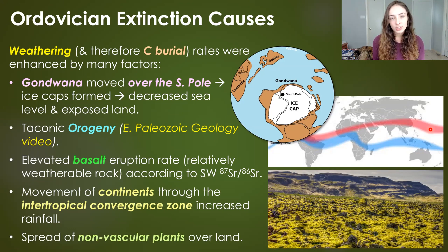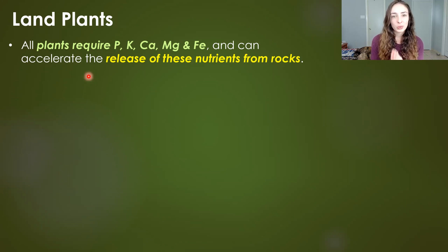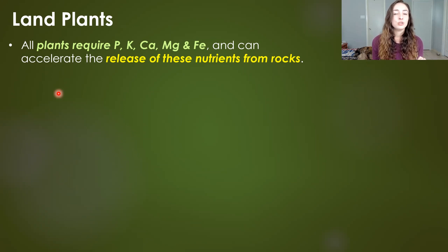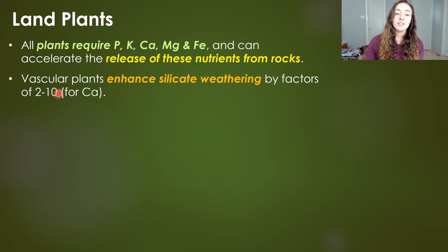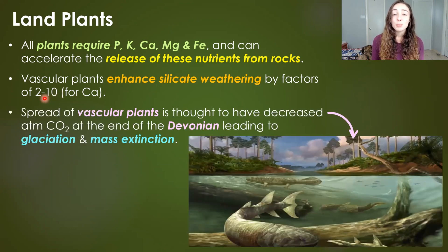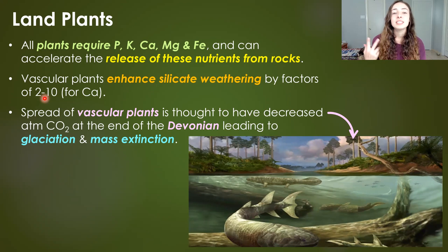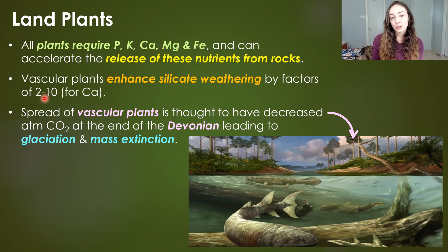And lastly, the spread of nonvascular plants over land. But how exactly do these plants increase weathering rates? All plants require nutrients like phosphorus, potassium, calcium, magnesium, and iron, and they can accelerate the release of these nutrients from rocks by excreting organic acids. Vascular plants enhance silicate weathering by factors of 2 to 10 for calcium. The spread of vascular plants throughout the Devonian is thought to have decreased atmospheric CO2 and led to the glaciation and mass extinction of the Devonian, the second of the big five mass extinctions.